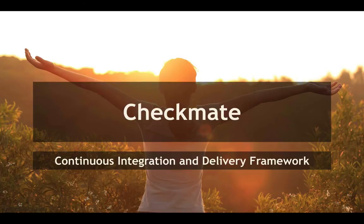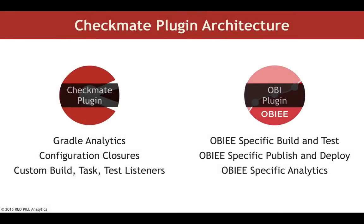Our subject today is Checkmate. Checkmate is a product that we've built in-house at Red Pill Analytics. It's a continuous integration and delivery framework. It's got a plugin architecture, and its purpose is to enable continuous integration and delivery — basic DevOps — for products or platforms that don't normally fit into that mold. We have the core Checkmate plugin, which provides hooks and basic functionality for other plugins, specifically for Oracle Business Intelligence.